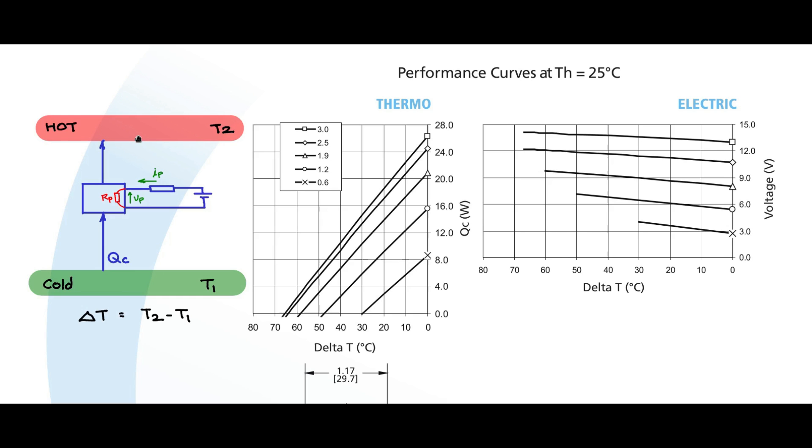Take for example, if I have to pump 17 watts of power out of the cold junction, then 17 comes somewhere here and then it cuts these three lines: the 1.9 amp line, 2.5 amp line and the 3 amp line. One of these can be used. You could probably apply around 13 volts 3 amps and have the operating point here. You could probably apply around 10 volts 2.5 amps and probably have the operating point around here.